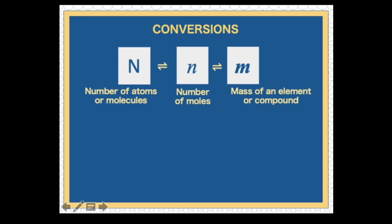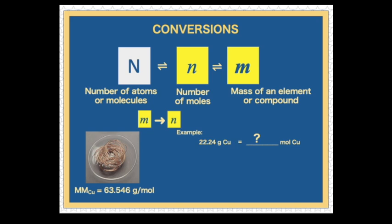Now, we will convert mass to the number of moles. How many moles of copper are there in 22.24 grams of copper? We set up the equation again. 22.24 grams of copper over x mole of copper is equal to 63.546 grams of copper over 1 mole of copper. Solving for x moles of copper, we will have 0.35 mole of copper.